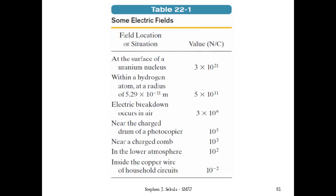Having defined the electric field mathematically as force per unit charge—force divided by test charge—we can identify its units. If force is in newtons and charge is in coulombs, then the electric field has units of newtons per coulomb. We can then consider what different electric field strengths look like and how they compare to one another.